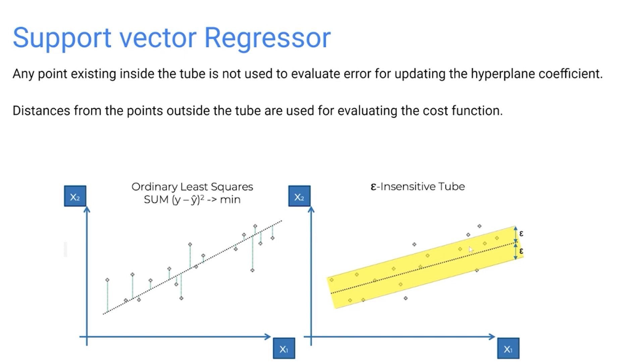Now for updating the equation of this hyperplane we can just ignore those points that exist within this tube, and hence SVR gives us the flexibility to define how much error is acceptable in our model and will find an appropriate hyperplane in higher dimension to fit the data. Now let's check the Python code needed for applying SVR.